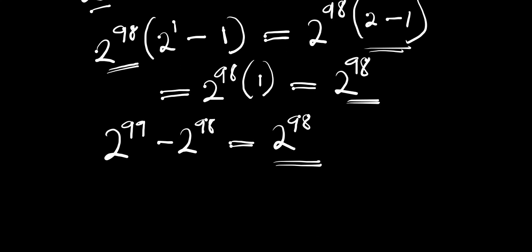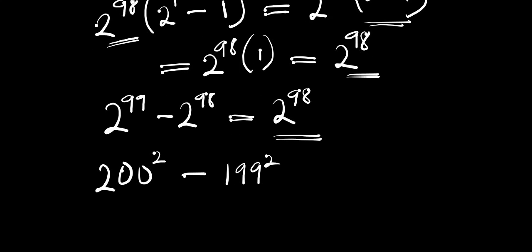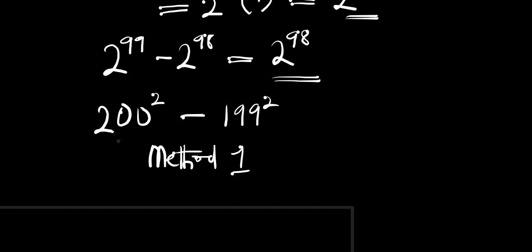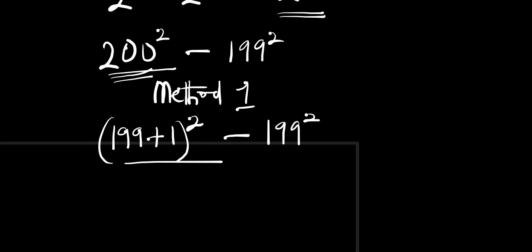There is another similar problem: 200 squared minus 199 squared, evaluated without a calculator. We'll look at two different methods. In Method 1, we rewrite 200 as 199 plus 1, so 200 squared becomes (199 plus 1) all to the power of 2, and then we subtract 199 squared.